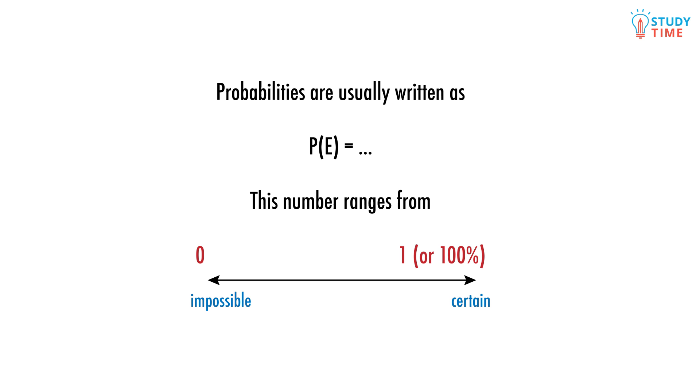So what is a probability? Probabilities are usually written as P of E equals, which is just a formal way to say this is the probability that an event E occurs. This number ranges from 0 or impossible to 100% or 1, a certain event.